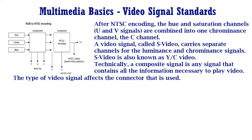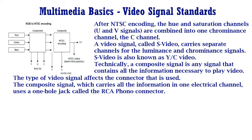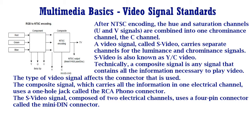A video signal can be transmitted as composite, S-video, or component video, and the type of video signal affects the connector that is used. The composite signal, which carries all the information in one electrical channel, uses a one-hole jack called the RCA Phono Connector. The S-video signal is composed of two electrical channels and uses a four-pin connector called the MiniDIN connector.